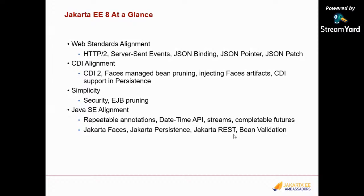Another simplification was removing unnecessary stuff — some pruning of older EJB2 features from the J2EE era. Java EE also makes sure to align with interesting Java SE features. Java EE5 was the first mainstream technology to adopt and prove out annotations. Java SE8 was a particularly nice release with repeatable annotations, the daytime API, streams, and completable features. Jakarta EE8 adapts all those interesting features into the platform and puts them into mainstream use.